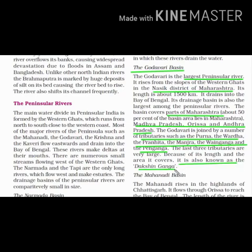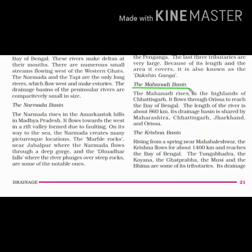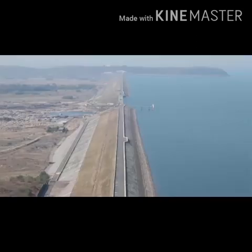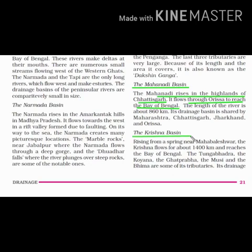Let's read about the Mahanadi Basin. This river rises in the highlands of Chhattisgarh, goes through Orissa and reaches the Bay of Bengal. The famous Hirakud Dam is built on this river. Now let's read about the Krishna Basin. This river originates from Mahabaleshwar in Satara district of Maharashtra, then flows towards Karnataka, after that Telangana and Andhra Pradesh, and finally drains into the Bay of Bengal. Some tributaries of this river are the Tungabhadra, the Koyna, the Ghatprabha, the Musi, and the Bhima.